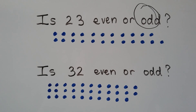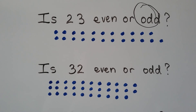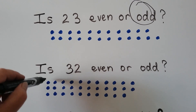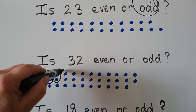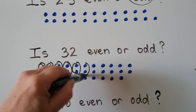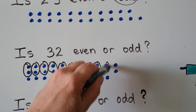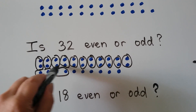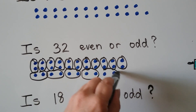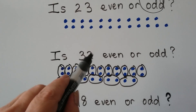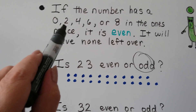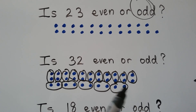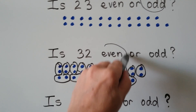Is 32 even or odd? This one's a little harder because now we have 2 here. We can make pairs — lots of them. We can make a pair here and a pair here and a pair here. We have none left over. And there's a 2 in the ones place — if the number has a 2 in the ones place, it's even. We had none left over, so it's even.